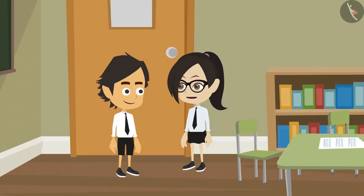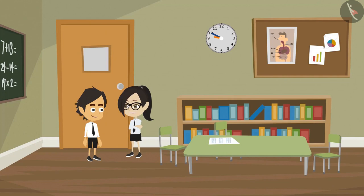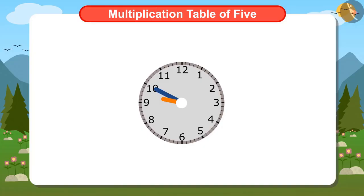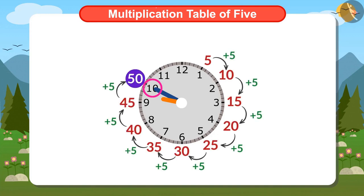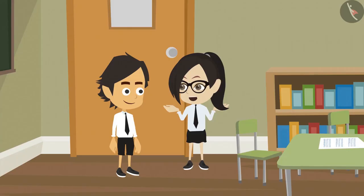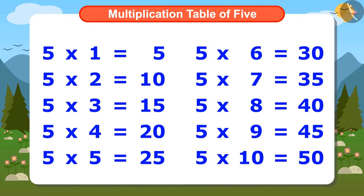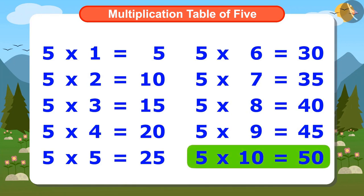If it is so easy, why don't you tell how many minutes the clock is showing? Look, the minute hand is on 10 right now. This means it is 50 minutes. How? Look at the multiplication table of 5 — 5 times 10 is 50.